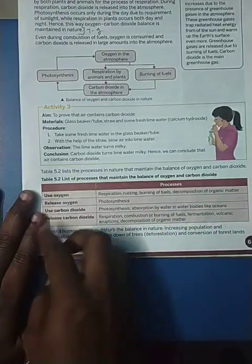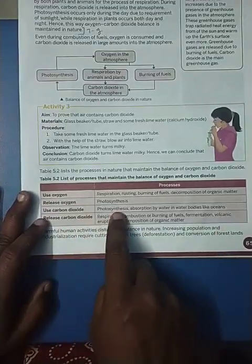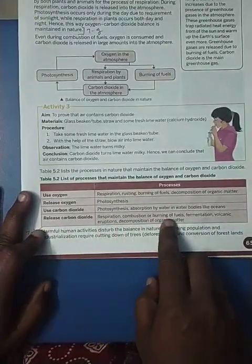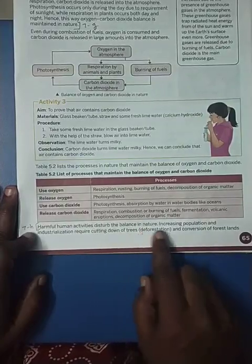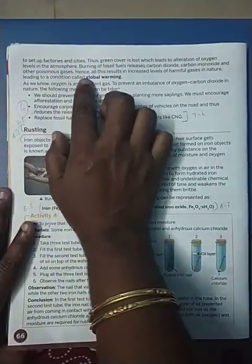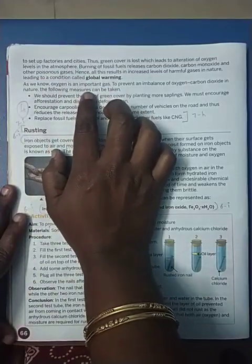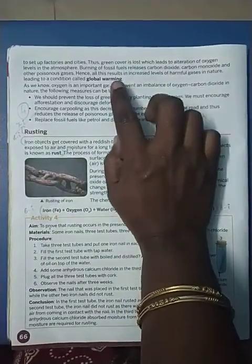Oxygen in the atmosphere is used for respiration and burning of fuels. From respiration, carbon dioxide is produced, which is used by photosynthesis — forming a cycle. Harmful human activities like increasing population, industrialization, and cutting down trees increase carbon dioxide and other poisonous gases in the atmosphere, leading to global warming — an increase in the temperature of the whole earth.